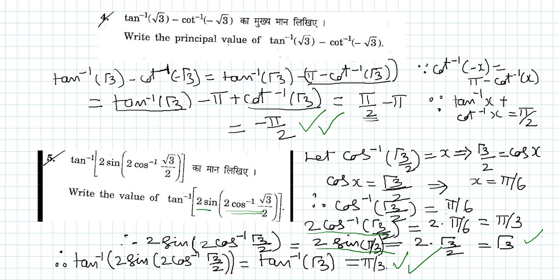Now come one step outer, that is tan inverse. The value of tan inverse of 2 sin of 2 cos inverse root 3 by 2 — we have already found that the inner expression equals root 3. So this is equal to tan inverse of root 3, which equals pi by 3 radian.